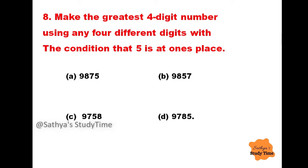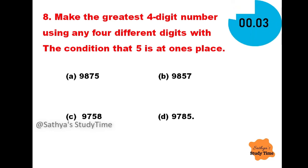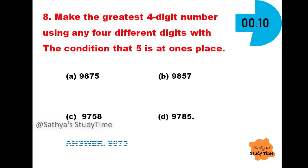Question 8: Make the greatest four-digit number using any four different digits with the condition that 5 is at the ones place. Your time starts now. The answer is 9875.